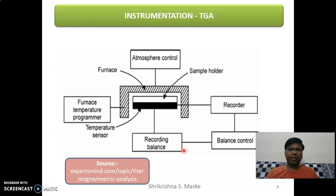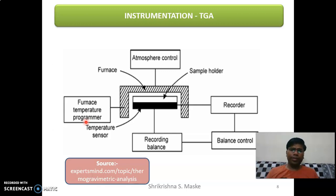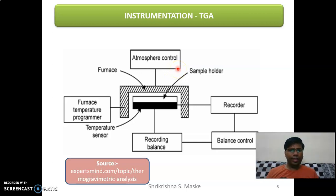Coming to the instrumentation part: we are going to heat our sample to a very high temperature, say 900 or 1000 degrees Celsius. We need a furnace, and this furnace should have a temperature programmer. The meaning of temperature programmer is that we increase our temperature slowly — for example, 5 degrees per minute, meaning after every one minute the temperature rises by 5 degrees Celsius. Atmosphere control is also required; we remove all the air and sometimes introduce inert gases.